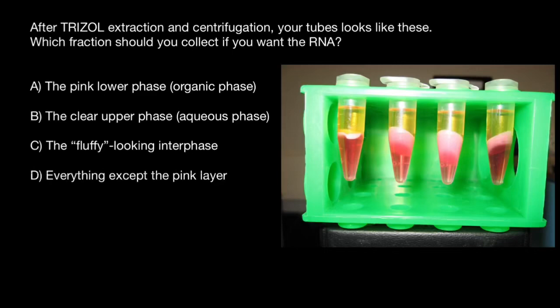Hello, and welcome to Nikolai's Genetics Lessons. And today's question is, after trizol extraction and centrifugation, your tubes look like this. Which fraction should you collect if you want the RNA?